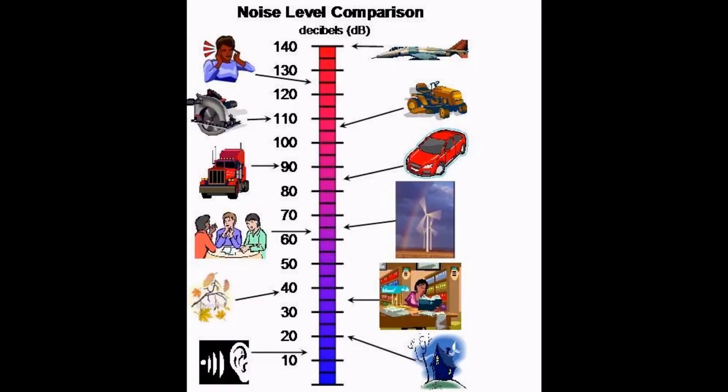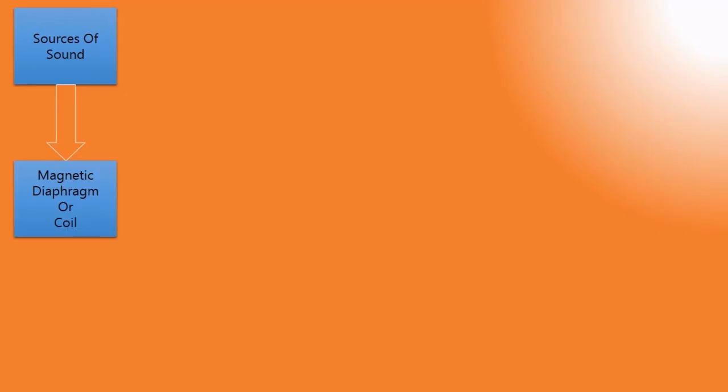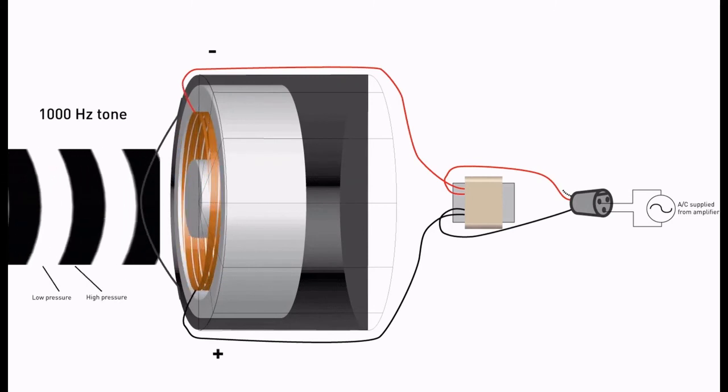This noise or sound acts as a primary source for input which is given to the magnetic diaphragm. The function of the magnetic diaphragm is to convert the sound into small electrical pulses. As these pulses are in millivolts, they are stored in a super capacitor in the form of electrical energy.